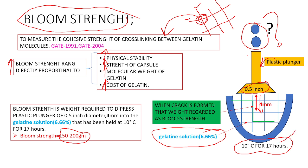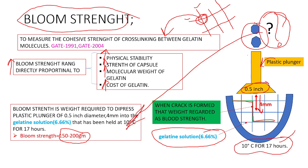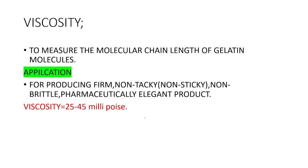When the plastic plunger is moved slowly into the gelatin solution, at the 4 millimeter distance a crack gets formed within the gelatin solution. The weight required to produce that crack is measured and called the bloom strength.